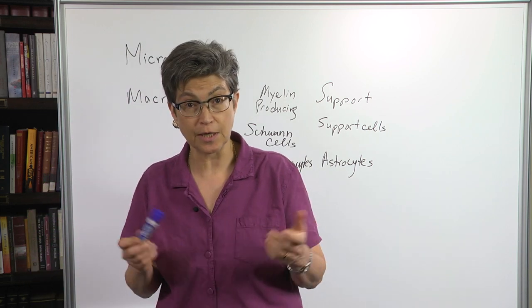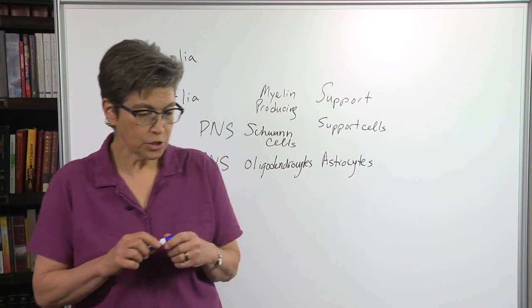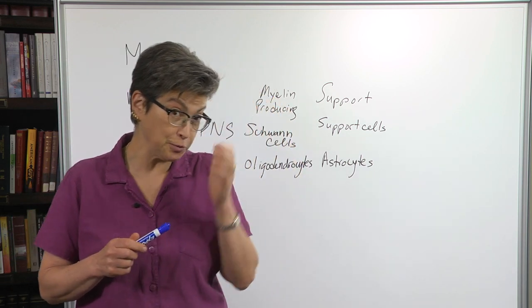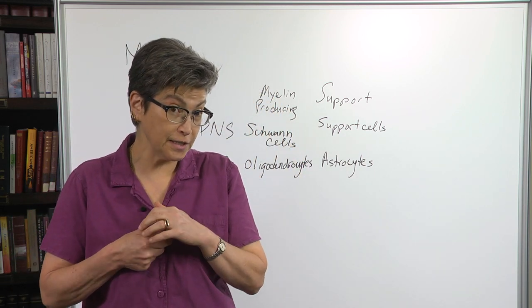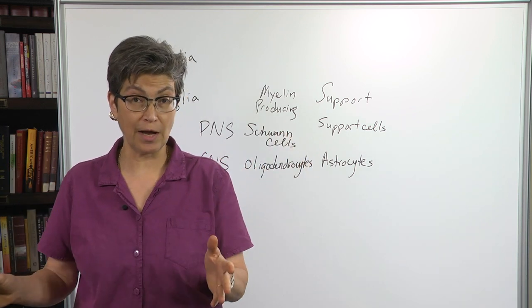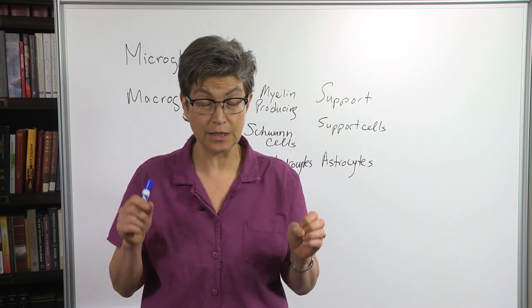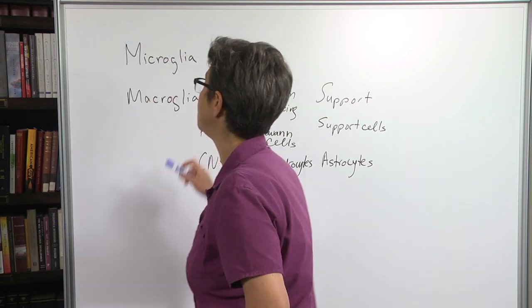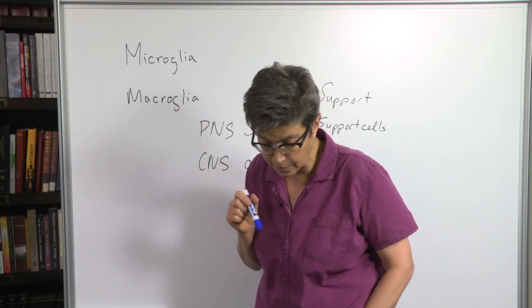So let's meet the characters here. I told you before that there was an exception to the idea that all the cellular components of the nervous system are derived from neuroectoderm. And that exception is the microglia. There are two different types of glia, microglia and macroglia.